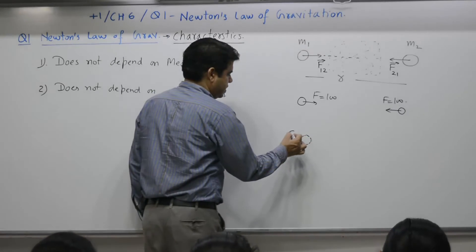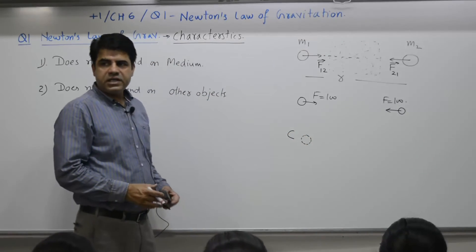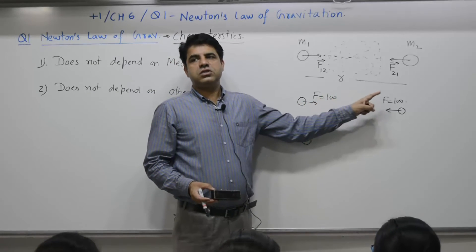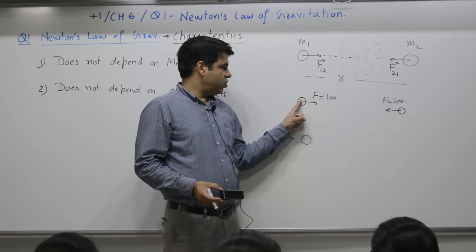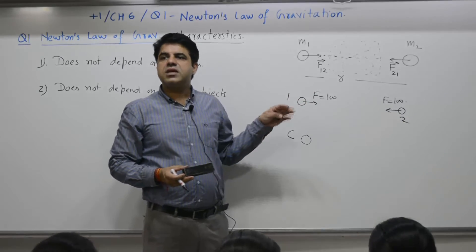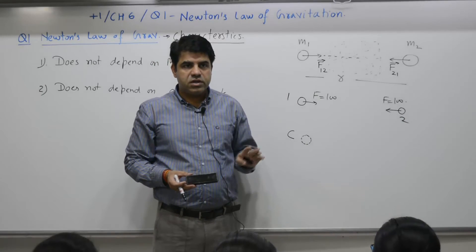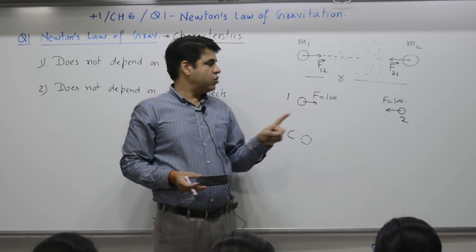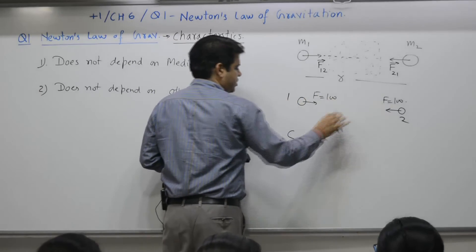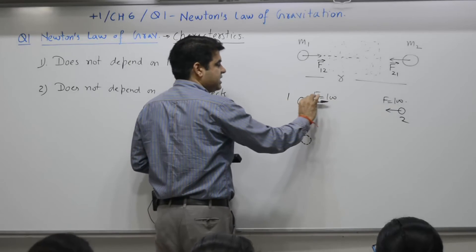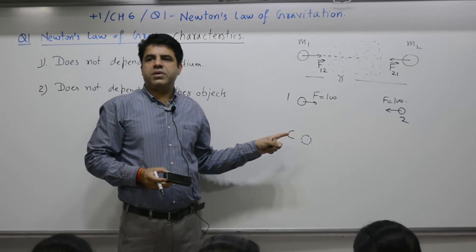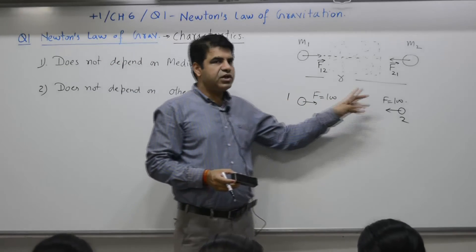Object C - this object would not change this force of 100 Newton. The force on 1 due to 2 will remain same. Another objective question: the resultant force on 1, this is force due to 2, this is force due to C, then the resultant of the 2 depends on surrounding mass. But force between 1 and 2, earlier it was 100, you place one more object C.